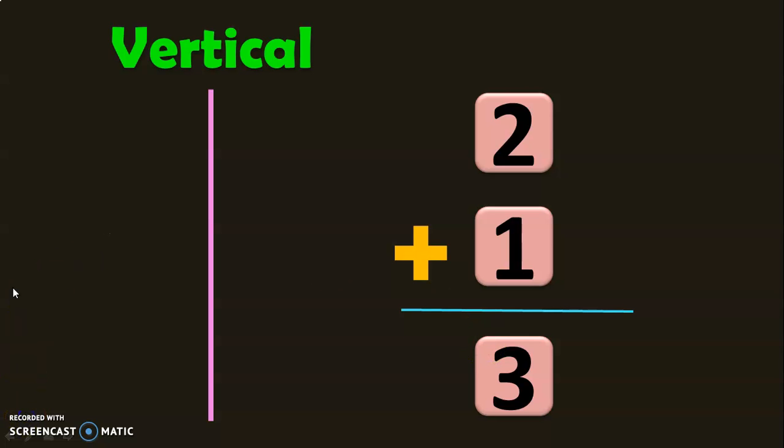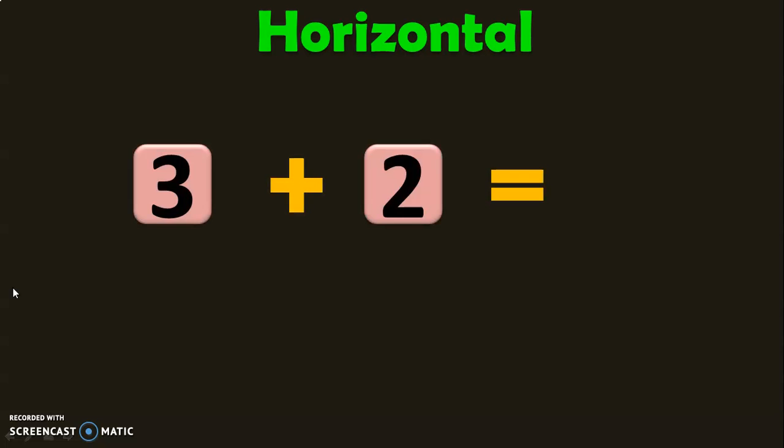Now that we have understood what is horizontal and vertical type of addition, let us do some example sums to add numbers in both horizontal and vertical type of addition methods. Let us begin with the horizontal method of addition. Here we have two numbers to be added: 3 plus 2.